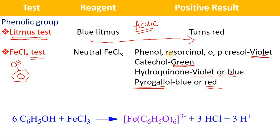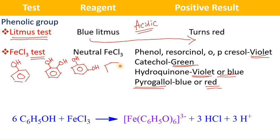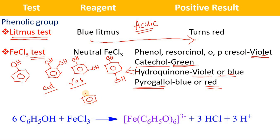Now let us look at the structures of these molecules. We know the structure of phenol and the derivatives of phenols. The first derivative has OH groups at the ortho positions — this is catechol. The second has OH groups at the meta position — this is resorcinol. The third has OH at the para position — this is hydroquinone. Another derivative has OH groups at the 1, 2, and 3 positions — this is pyrogallol.